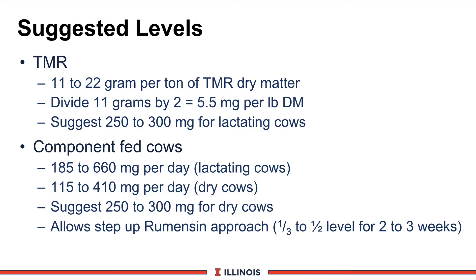The more recent change covers component-fed herds — cows that get grain in a pile, an electronic grain feeder, a bale of hay, or some pasture. The guideline is expressed in milligrams per day: 185 to 660 milligrams per cow per day for lactating cows, and 115 to 410 milligrams for dry cows. We recommend, based on Canadian research and other sources, feeding around 250 to 300 milligrams for both dry cows and lactating cows. If milk components remain solid at that level, you may want to try slightly higher levels and allow the herd to titrate accordingly.